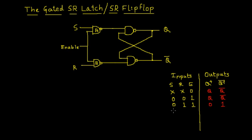Next we consider inputs S=1, R=0, and Enable=1. 1 NAND 1 results in 0, and 1 NAND 0 results in 1. Irrespective of the second input to the upper NAND gate, the output is going to be 1. This 1 acts as another input to the lower NAND gate, and 1 NAND 1 results in 0. So for the input 1 and 0 we get the output as 1 and 0. I'll add this to the truth table — the latch is set.